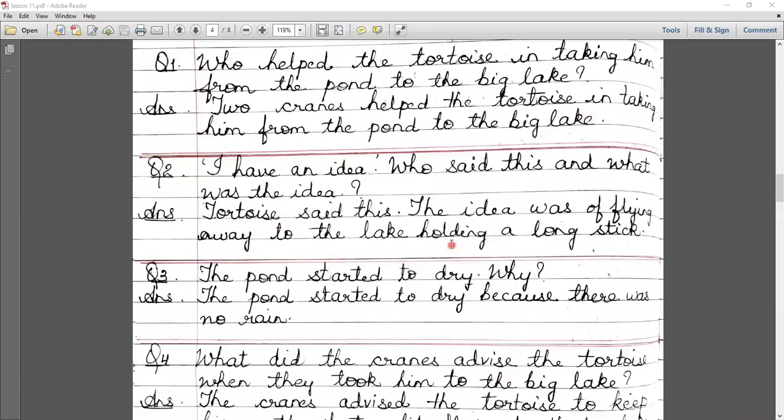Now you know in many stories we read about the tortoise said that I have an idea. The idea was that they will put a long stick and the two cranes will hold the stick from both ends with their beaks, and the tortoise will hold the stick from the middle and they will fly to the big lake.